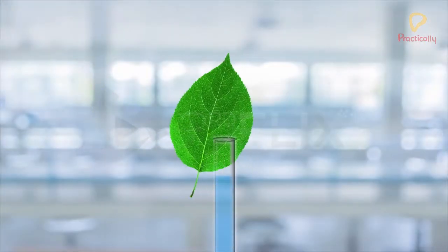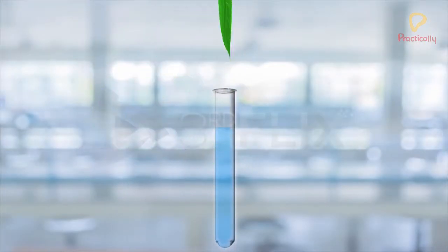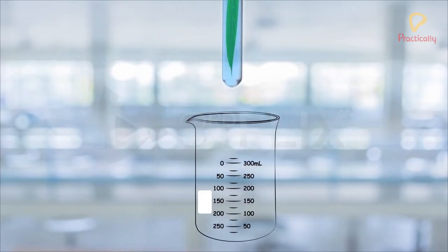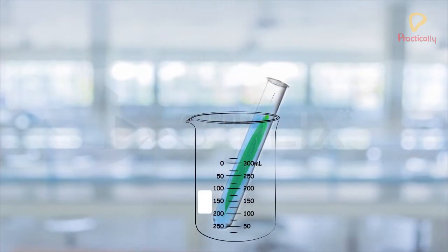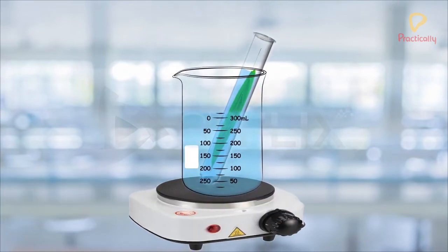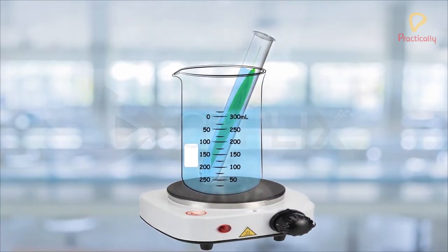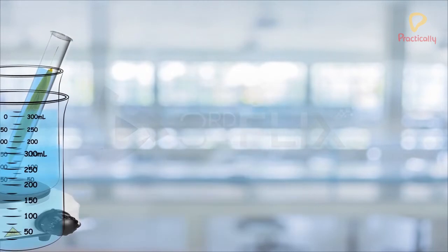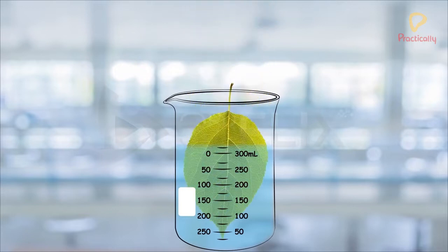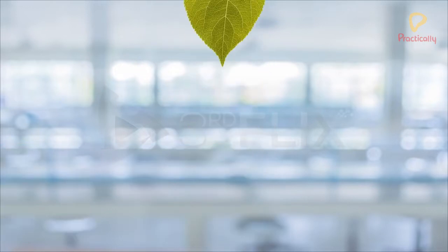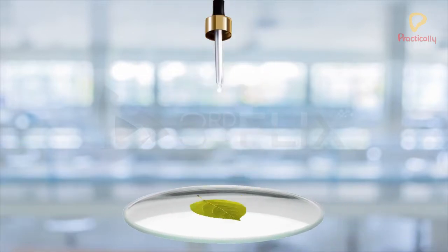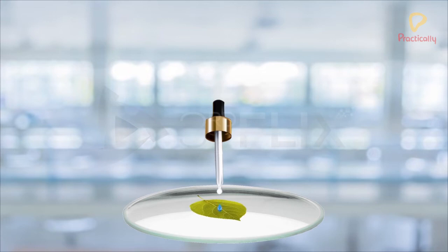We take a leaf and immerse it in a test tube filled with spirit. Placing this test tube in a beaker filled with water, we heat the beaker. After the leaf loses its color, we wash it with water and place it on a watch glass.